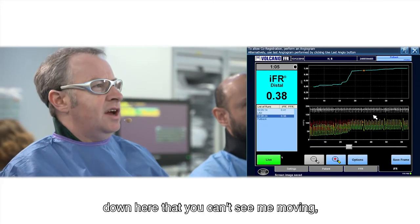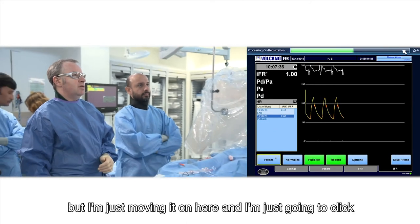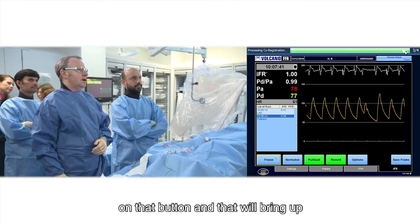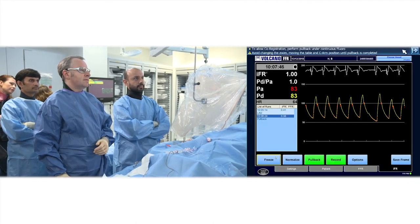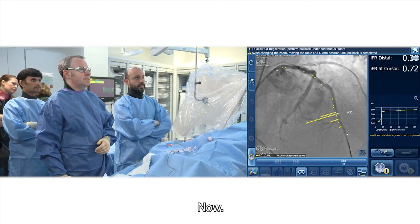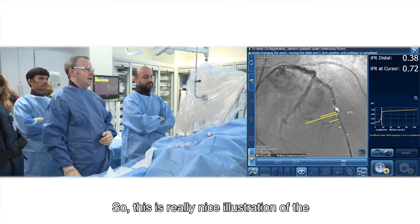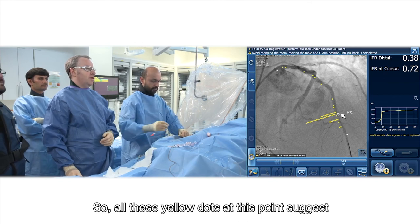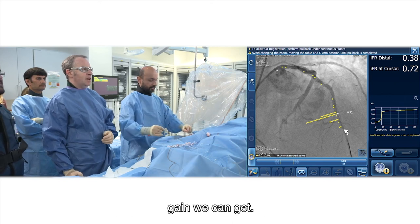Great, so now that's screen clear. I've got a joystick down here that you can't see me moving, but I'm just moving it out here. And I'm just going to click on that button, and then that will bring up the SyncVision co-registration. Now, so this is a really nice illustration of the use of this system. So all these yellow dots at this point suggest this is where the maximum benefit or the maximum delta gain we can get.